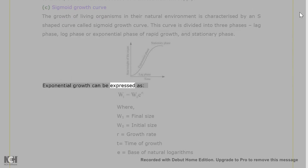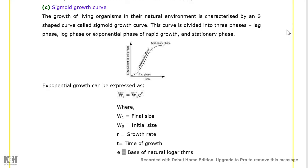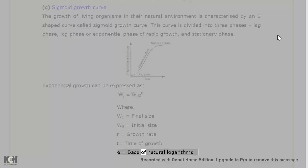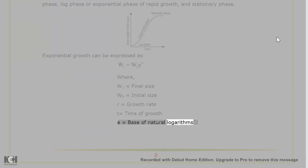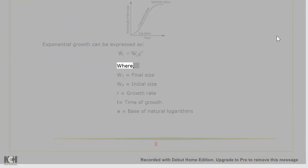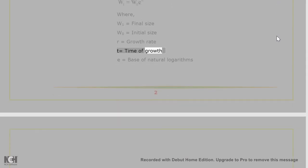Exponential growth can be expressed as: E = e^(r*t), where e is the base of natural logarithms, W1 equals final size, W0 equals initial size, R equals growth rate, and T equals time of growth.